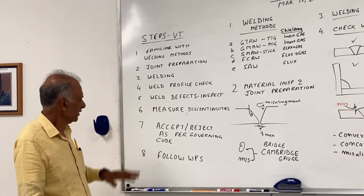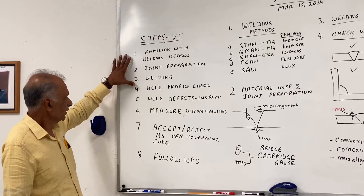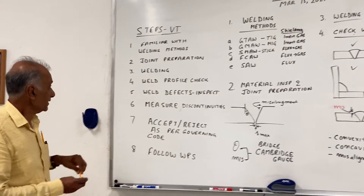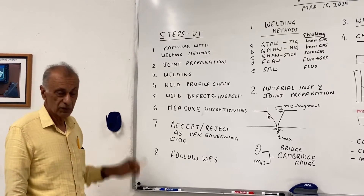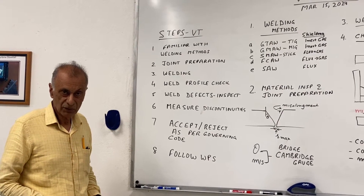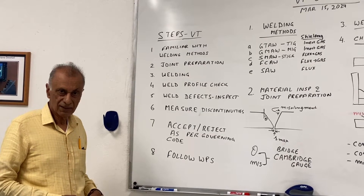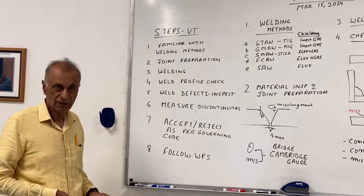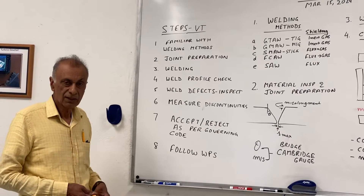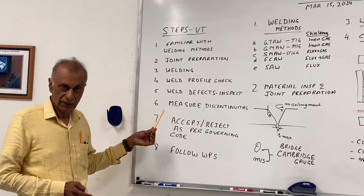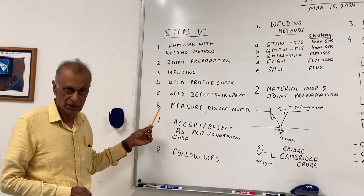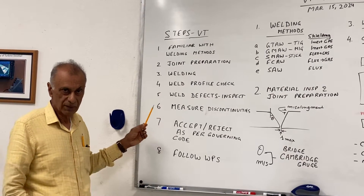Here I have given you the steps for visual testing. The first thing is that the person doing the visual testing of the welds should be familiar with the welding methods — he knows how the welding is done and what kind of flaws to expect. If they are using flux, there is a potential for slag. If they are using gas as the shielding approach, there could be a chance of porosity. All that knowledge has to be there.